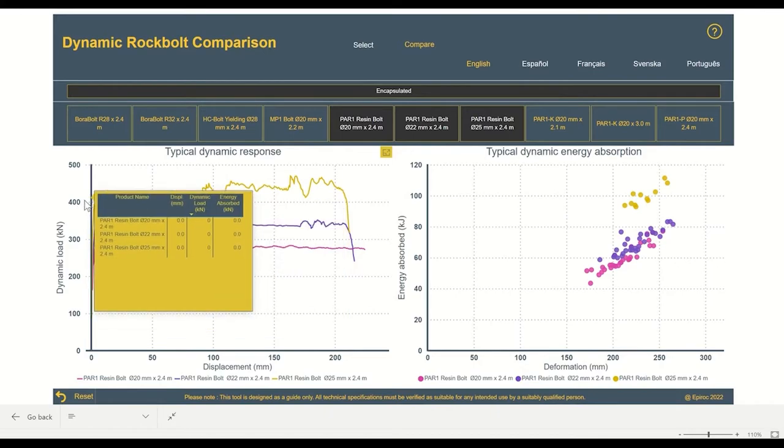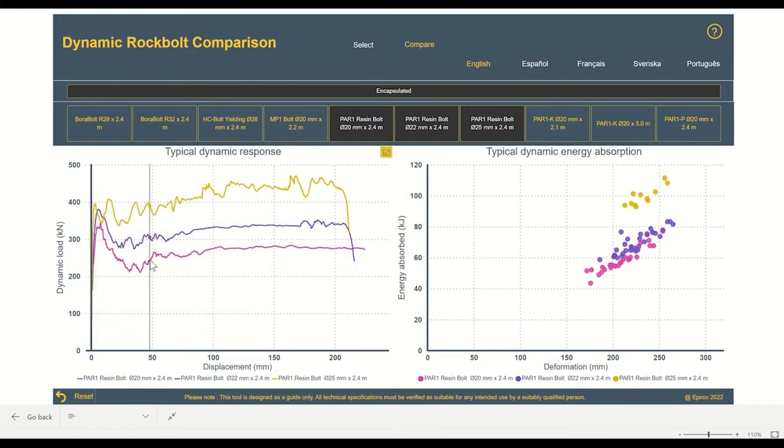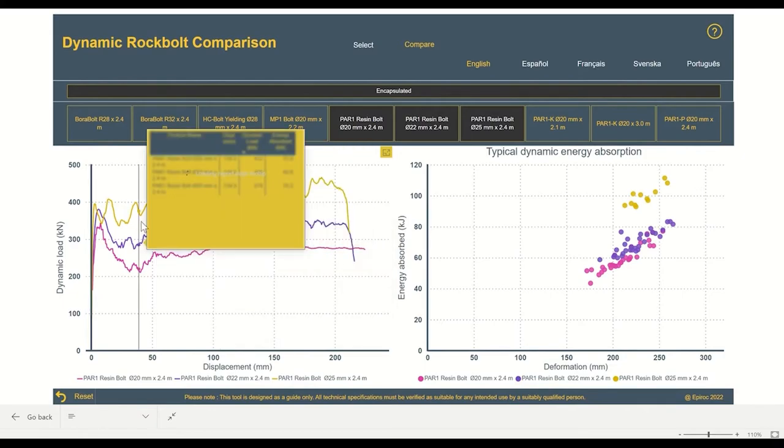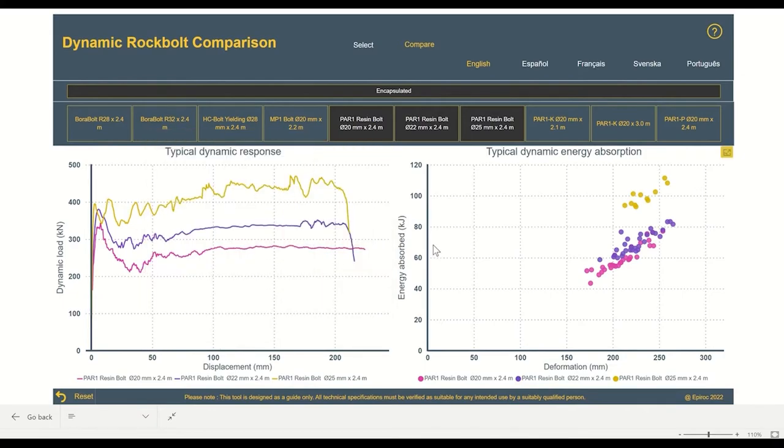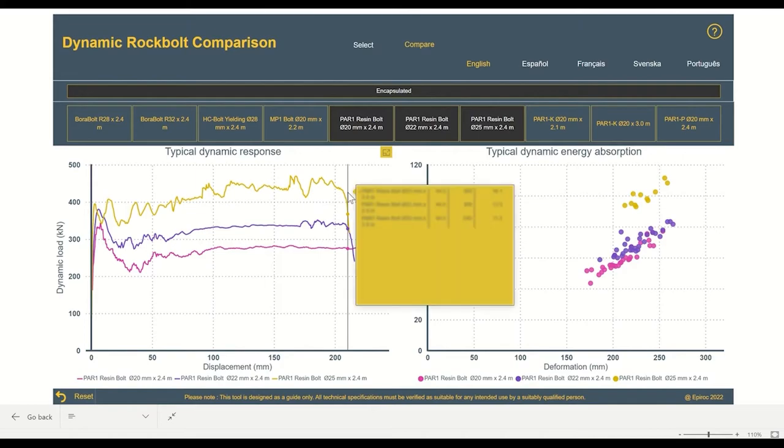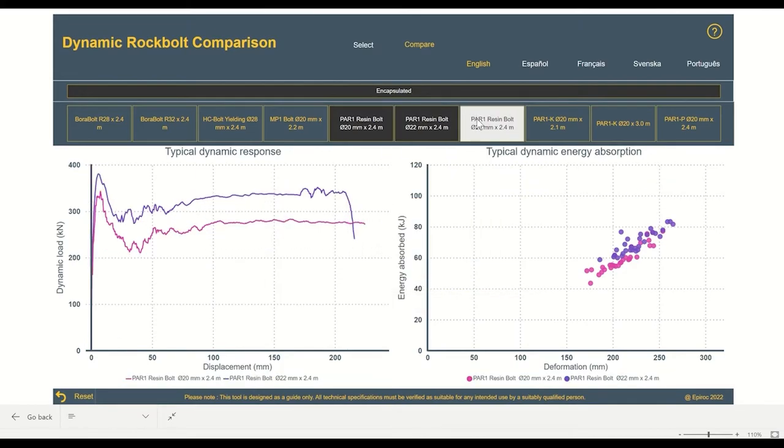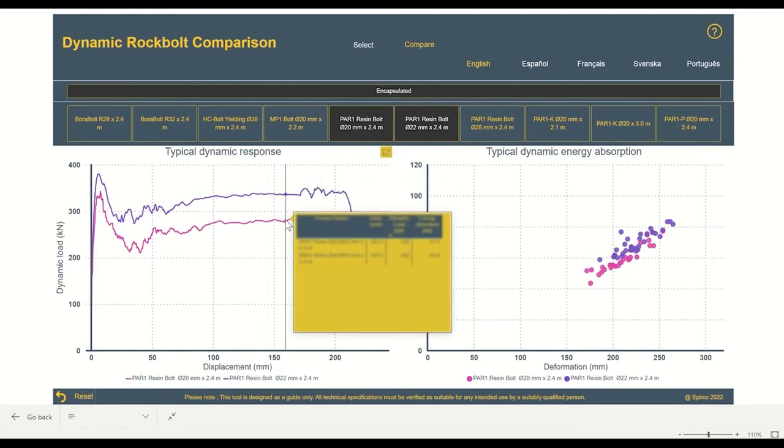The 25mm obviously giving us the highest, and the 20mm the lowest dynamic response. If we have information from our ground support plan that says we're looking for a load around 300kN, that 25mm bar is clearly too strong, so we can turn that off.